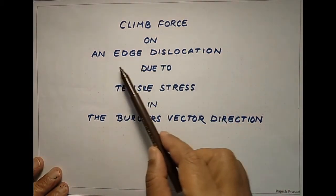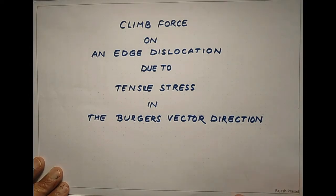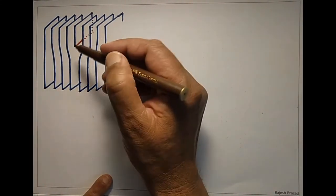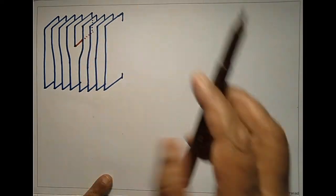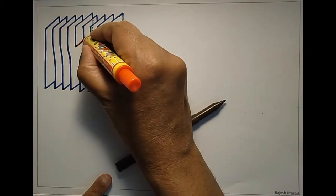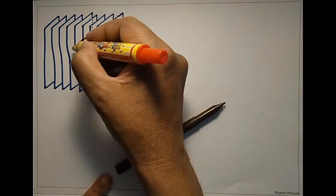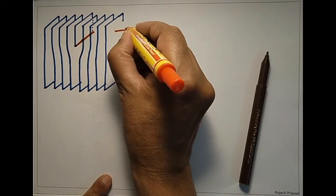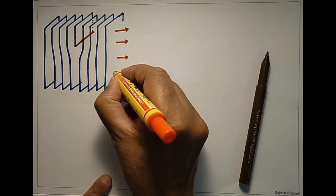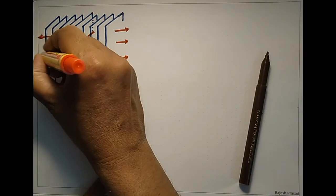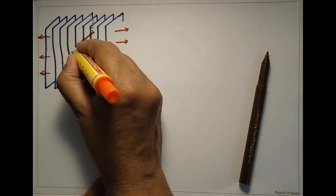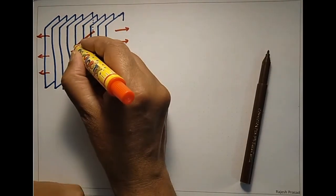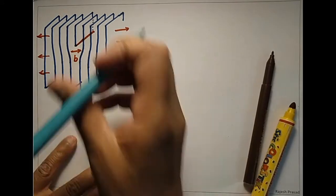Let us consider climb force on an edge dislocation due to tensile stresses. In this case, the tensile stress should be in the direction of the Burgers vector. Consider this configuration showing the red line as the dislocation line — the bottom edge of the extra half plane. Suppose that I apply tensile forces on this crystal in this direction, which is also the direction of the Burgers vector of this dislocation.